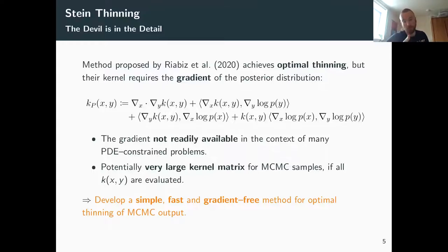There has been a little bit of research on this idea of thinning already. Some of you might be familiar with this paper on Stein thinning that they call optimal thinning of MCMC output. Here's the kernel that they use to compute the discrepancy between the thin sample and the full set of samples.